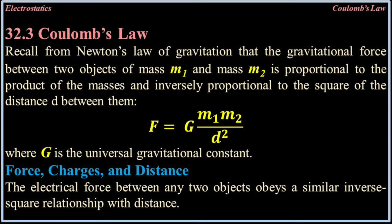32.3 Coulomb's Law. Recall from Newton's Law of Gravitation that the gravitational force between two objects of mass 1 and mass 2 is proportional to the product of the masses and inversely proportional to the square of the distance between them, where G is the universal gravitational constant: F = G × M1 × M2 / D². The electric force between any two objects obeys a similar inverse square relationship with distance.